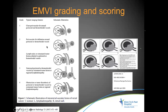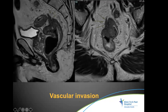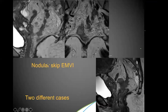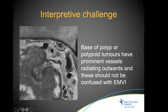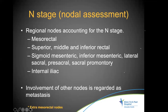EMVI can be nodular or skip (discontinuous) or continuous with expanded vessels and irregular abnormal signal going beyond the mesorectum. MRI is supposed to play a very important role in detecting EMVI, sometimes better than histopathology. However, a vessel going into a polyp's base should not be mistaken for EMVI — those are normal vessels supplying the polyp.